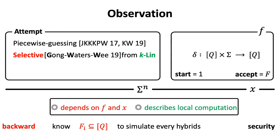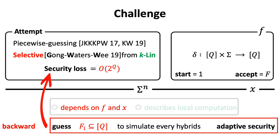The very first idea towards adaptive security is to apply the piecewise guessing technique to the selective secure scheme. However, we have to guess the set Fi which causes exponential security loss in Q since x is unknown at the beginning in the adaptive model.